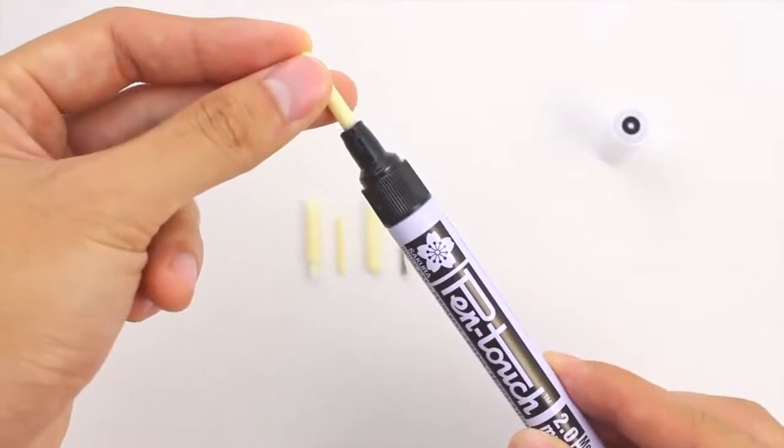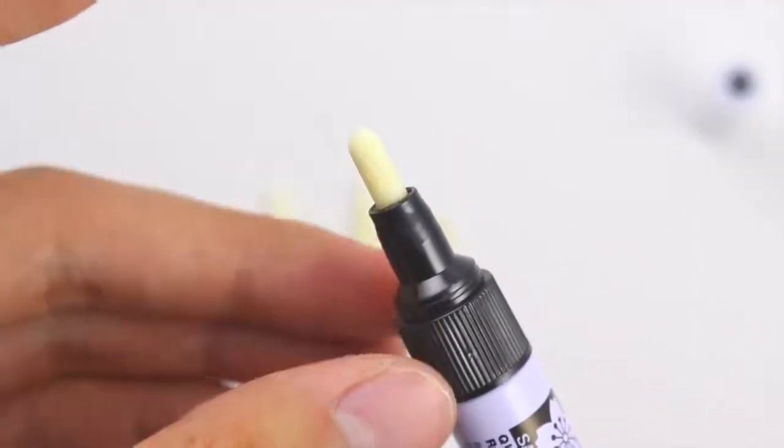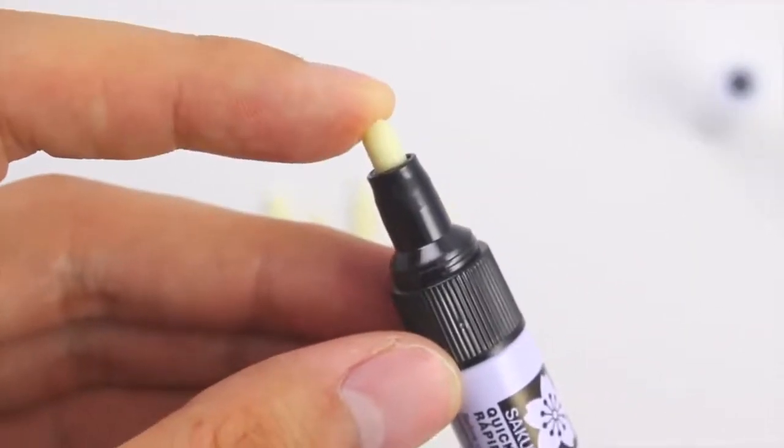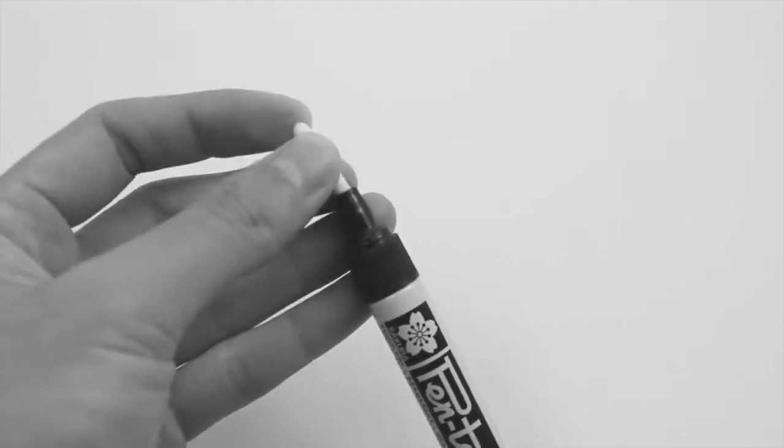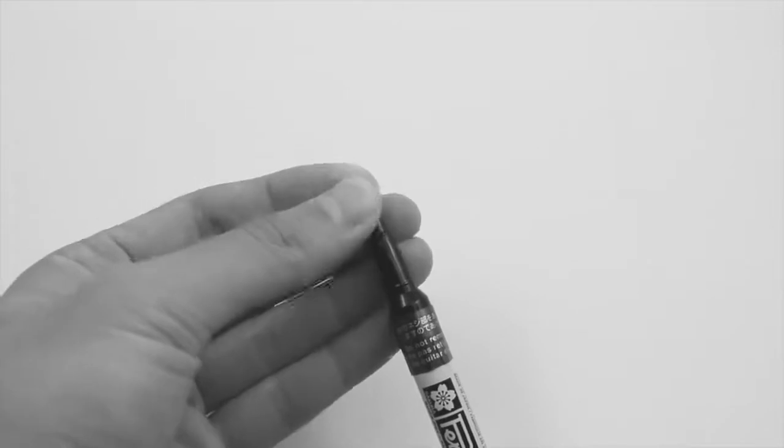Lastly, insert the replacement nib into the nib holder and gently push down on the nib to place it into the valve chamber. It is important not to insert the nib at an angle because it may unseat the internal holding mechanism of the marker.